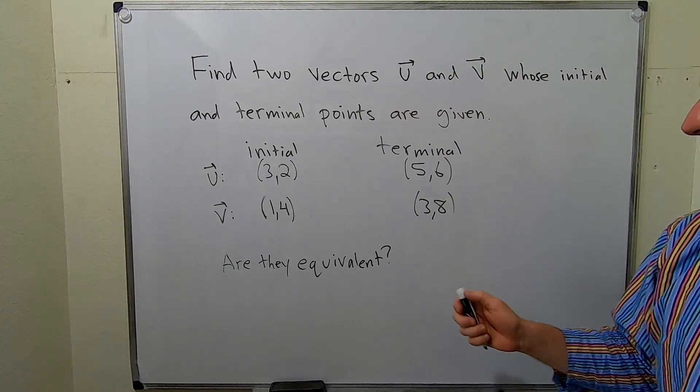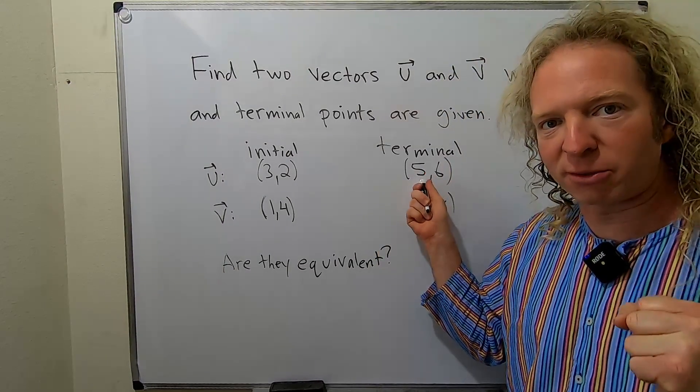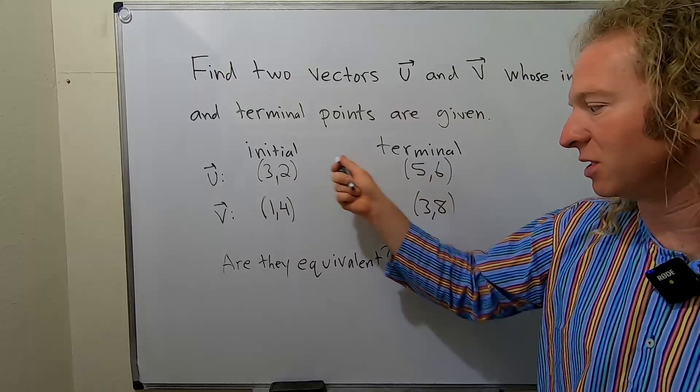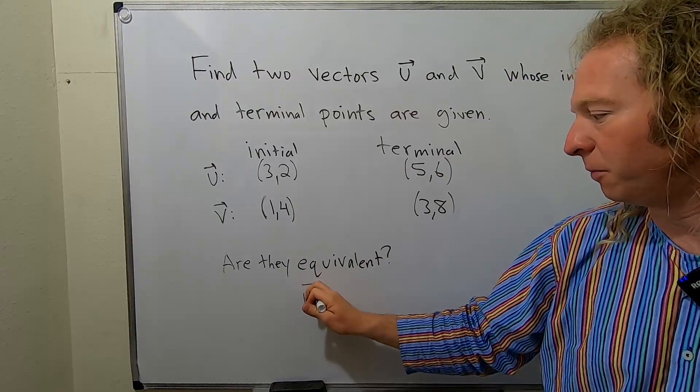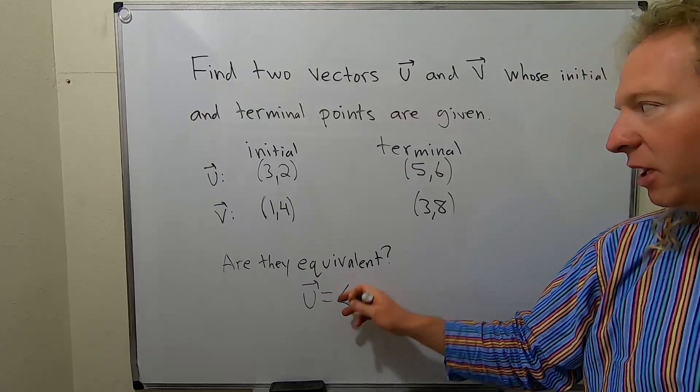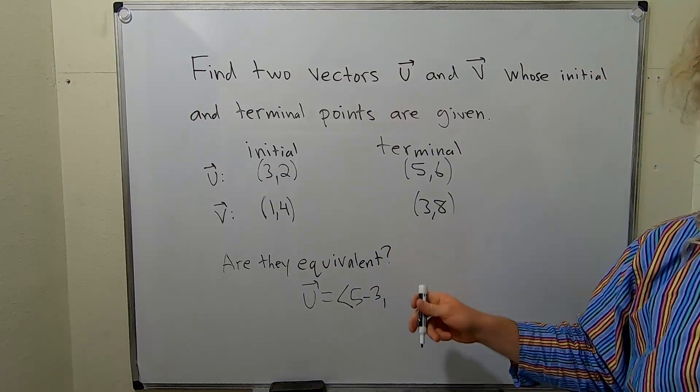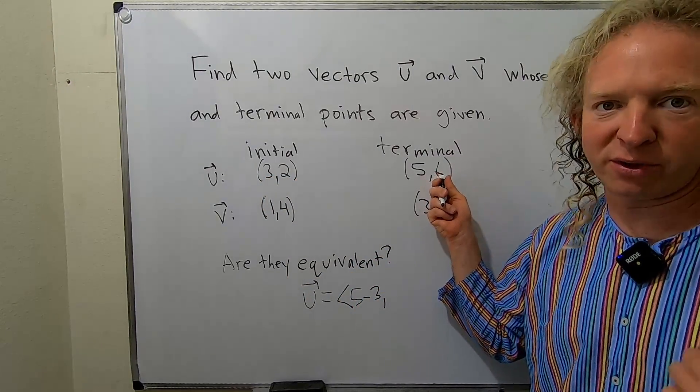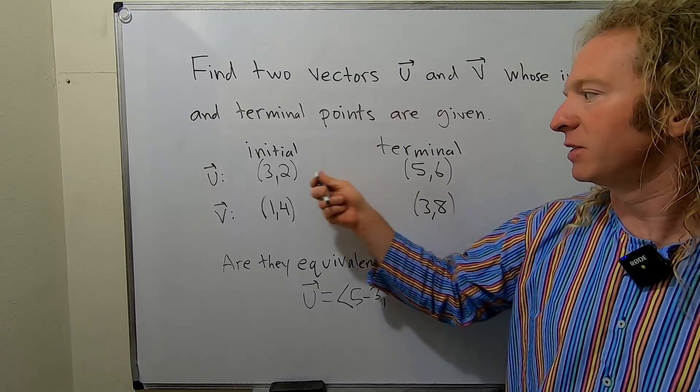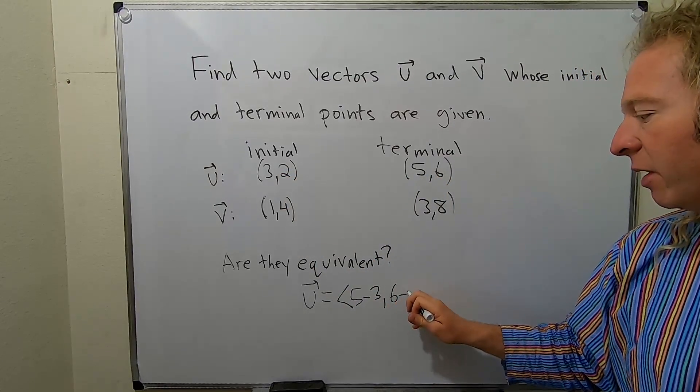So to find the vectors, all we do is we subtract. It's always terminal minus initial, terminal minus initial. So for u, it would be 5 minus 3, so 5 minus 3, and then you subtract the second coordinate or the y component, so 6 minus 2.